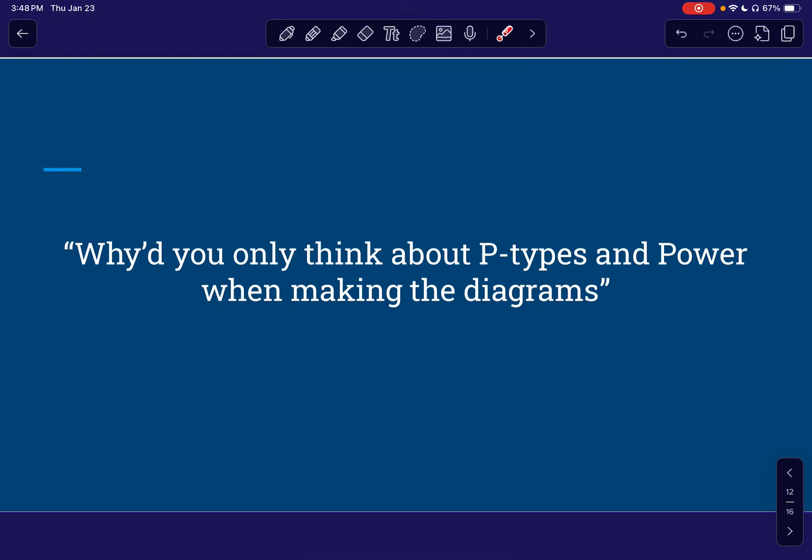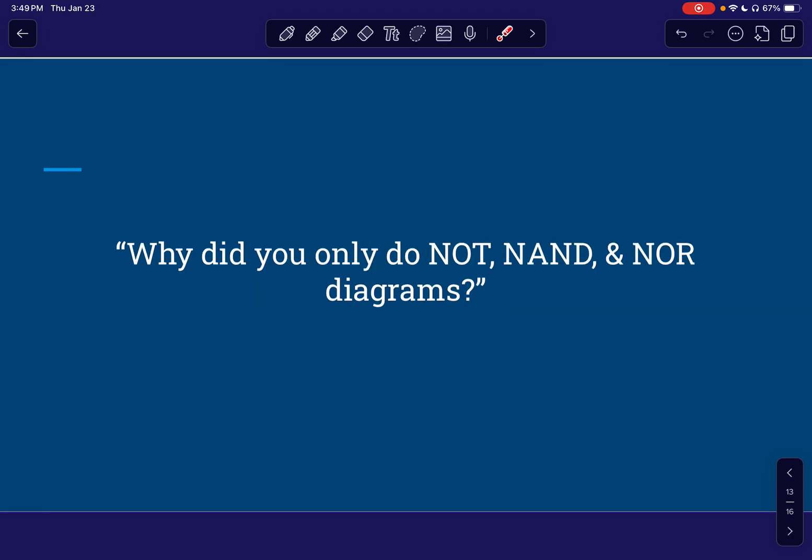All right. So you might be thinking, why was your strategy to only think about the P types and the power when making the diagrams? This is just kind of a matter of personal preference for me. It's a totally equally valid way if you wanted to say, or think to yourself, well, when does this logic gate become false and then try to work backwards with the N types coming up from the ground? I believe that method is called pull down. And then the one that I described, which is what I prefer is pull up method, I believe. But yeah, just a personal preference. It's a lot more intuitive for me to visualize when something is true versus when something is false.